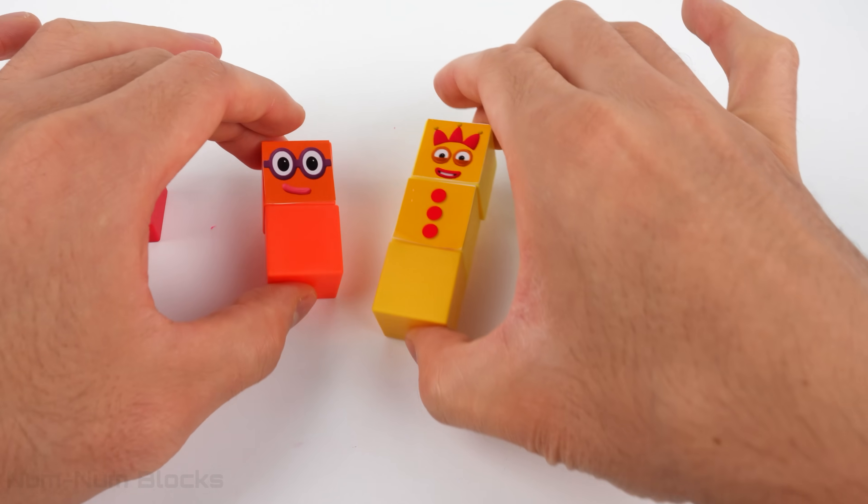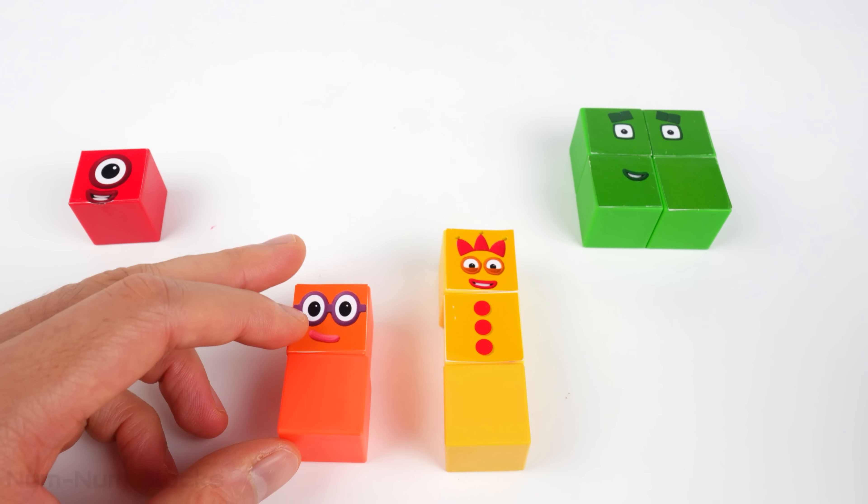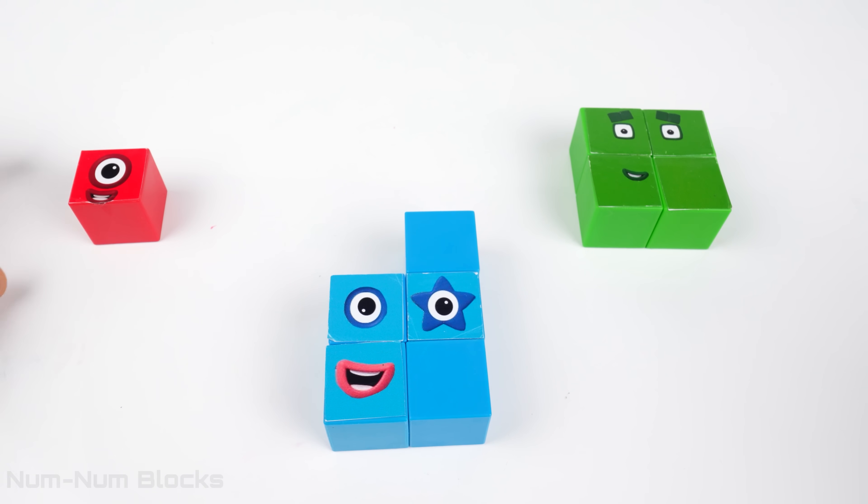Let's start by combining the two number blocks in the middle. Two and three. Two plus three equals five!